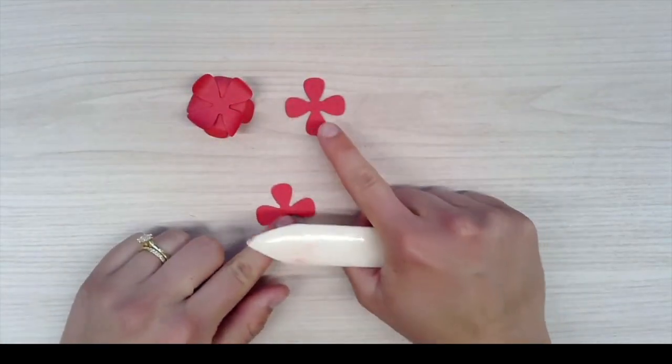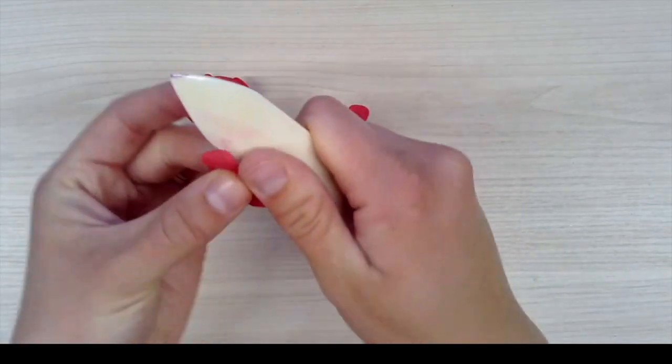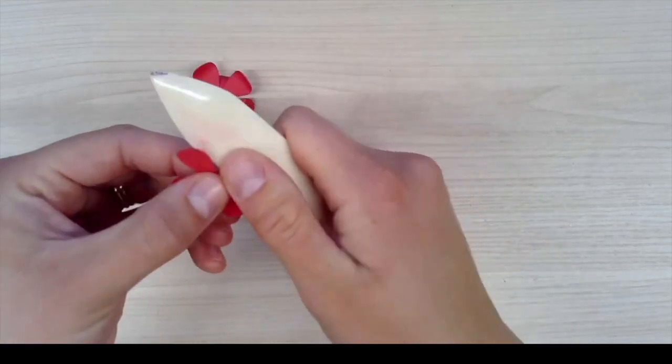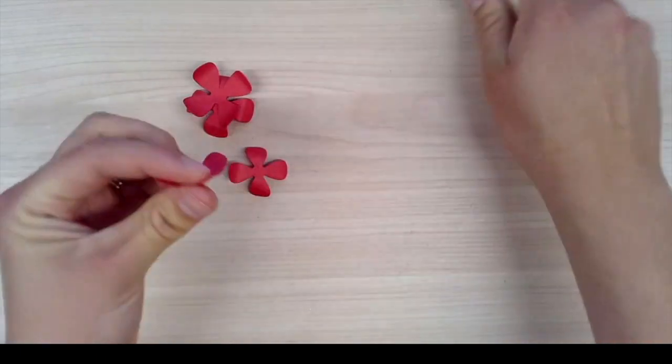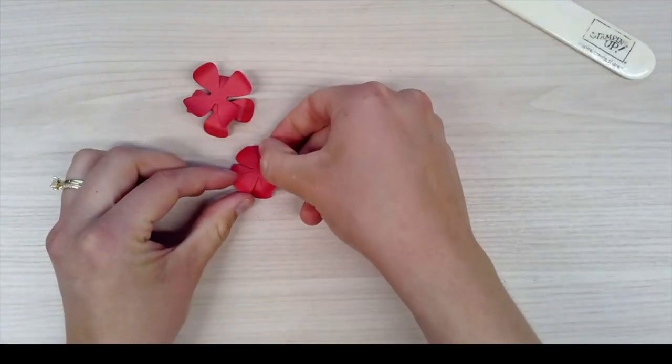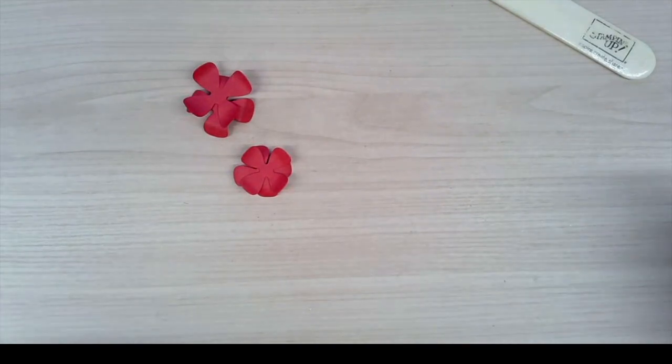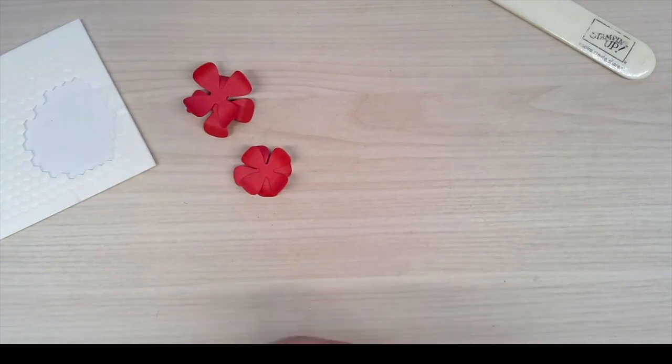I'm going to do the exact same thing for the smaller ones. So one of them is going to go down and then the other one you can also go down, and then we're going to flip it upside down so that we have this variated look of petals because all petals are crazy and go all different directions.